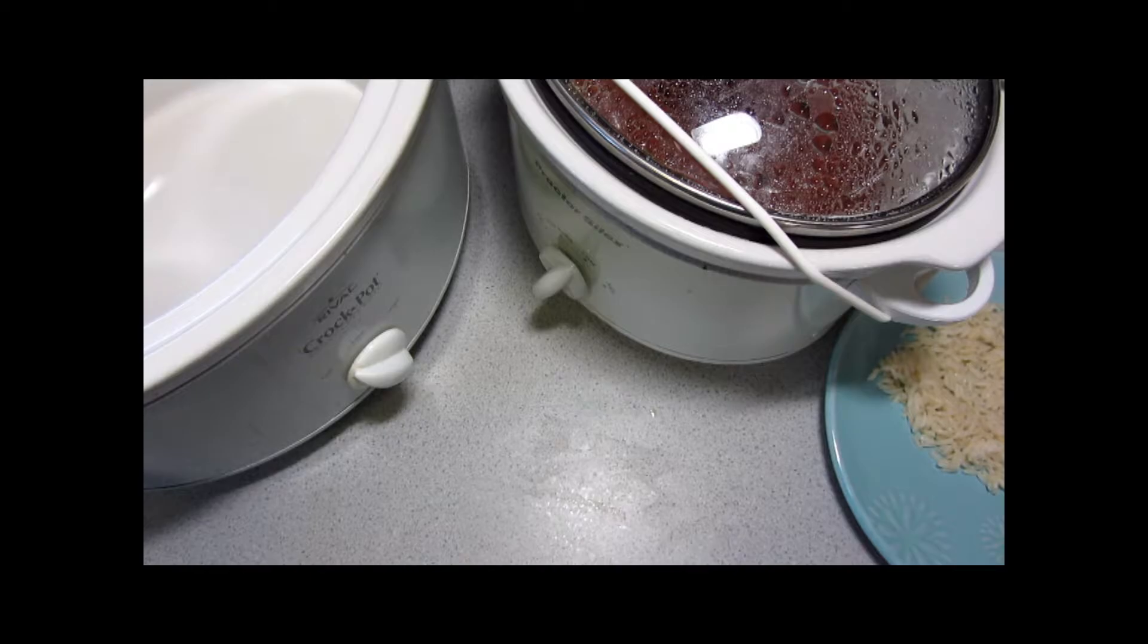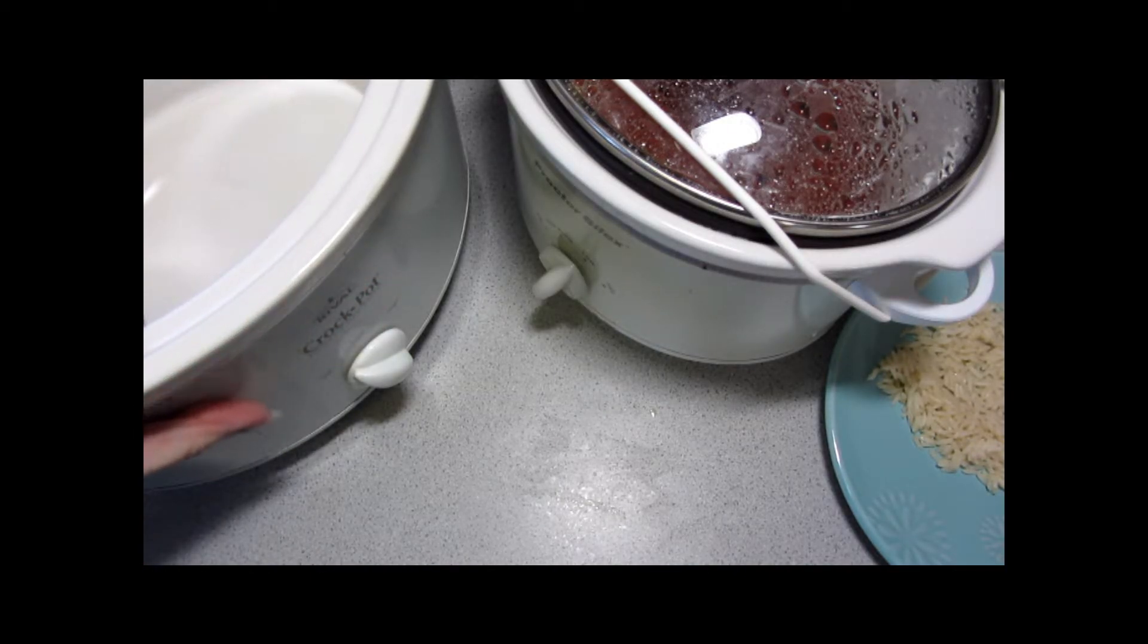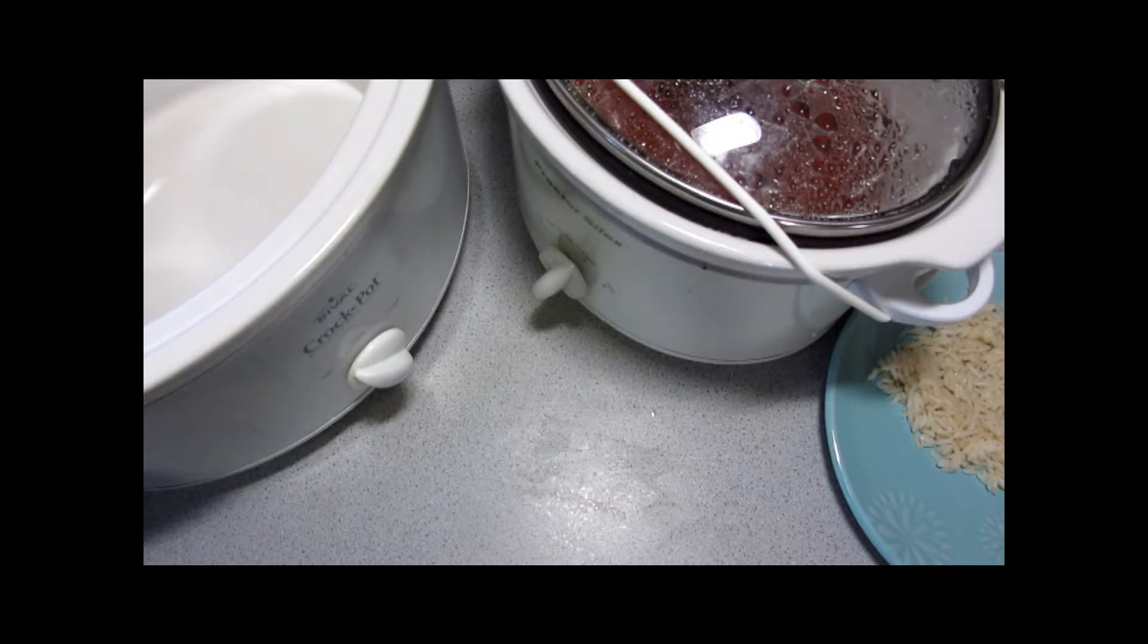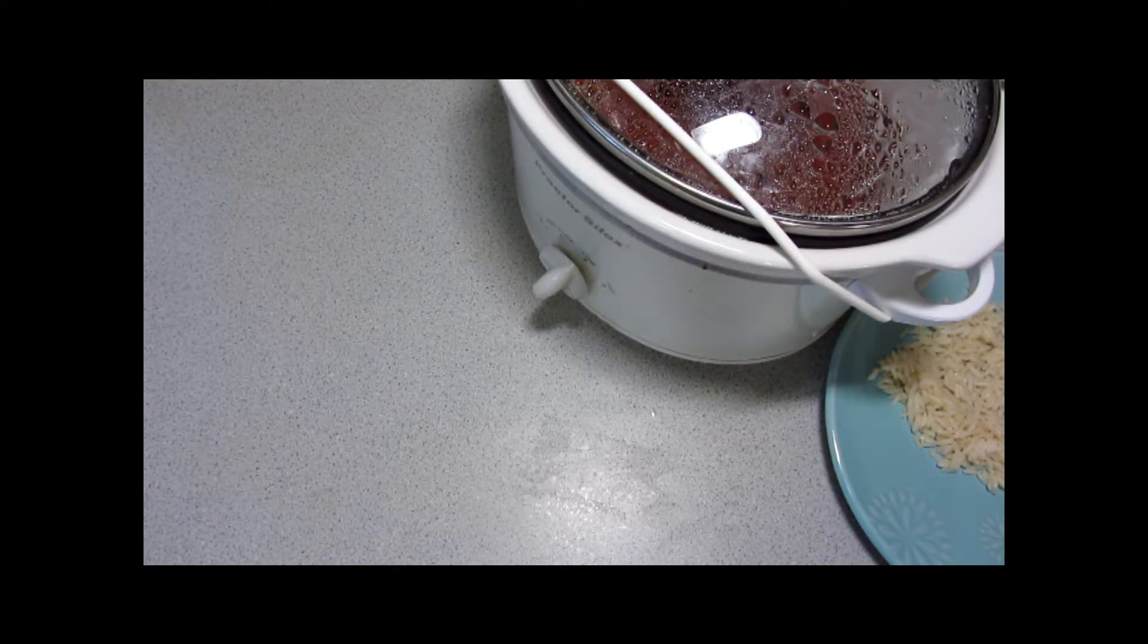Large temperature differences can shock the slow cooker crock pot insert, and you can have some problems. You can use some frozen items, but try to avoid frozen meat and let it thaw before you use it.